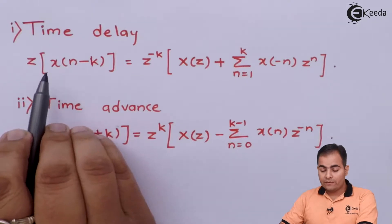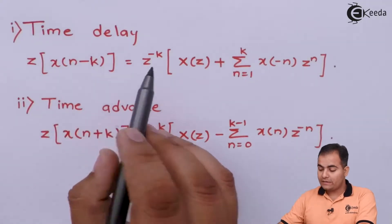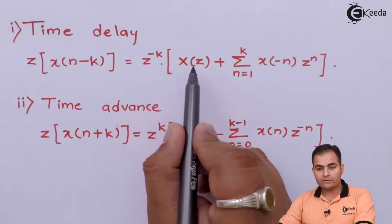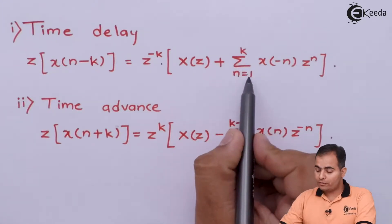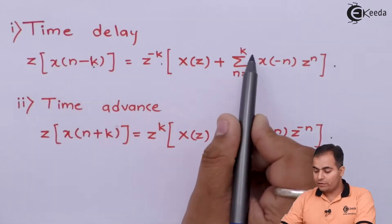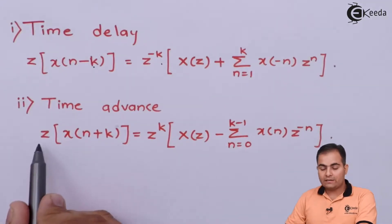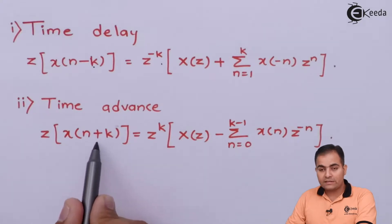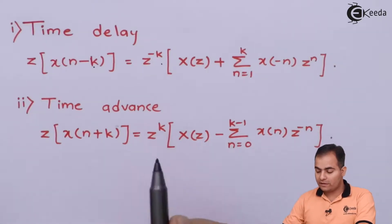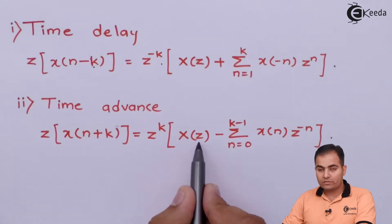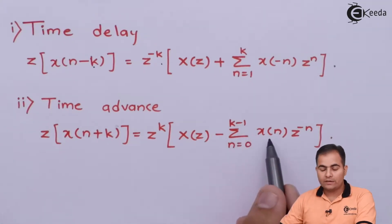If the function is delayed by value K, then in the one-sided Z-transform, the time shifting property gives Z^(-K) multiplied by the bracket containing X(Z) plus a summation where N varies from 1 to K, of X(-N) · Z^(+N). The time advance formula: Z-transform of x(n+K) gives Z^(+K) multiplied by X(Z) minus the summation where N varies from 0 to K-1, of X(N) · Z^(-N).